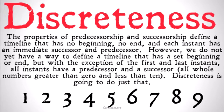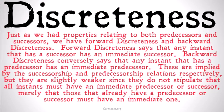We need a way to describe a set like this. Discreteness is going to do just that. Just as we had properties relating to both predecessors and successors, we have forward discreteness and backward discreteness.